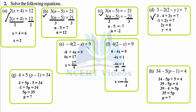Part d: minus 4 times (e minus x) equals 9. Open the bracket: minus 8 minus minus gives plus 4x equals 9. Transpose minus 8: 4x equals 9 plus 8, which is 17. Divide both sides by 4 — 4 cancels — so x equals 17 over 4.